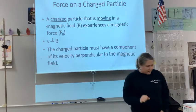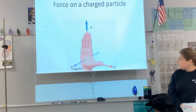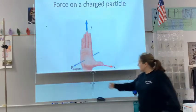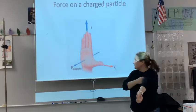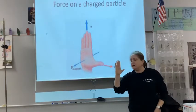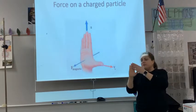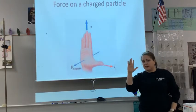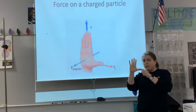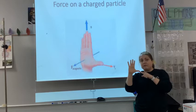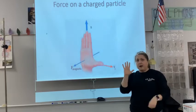Looking at page 60 in your workbook, you have a diagram that demonstrates how you will use your hand to determine the direction of the force. Your fingers point in the direction of the magnetic field B, your thumb points in the direction of the velocity of the positive charge, and the force comes out of your palm.